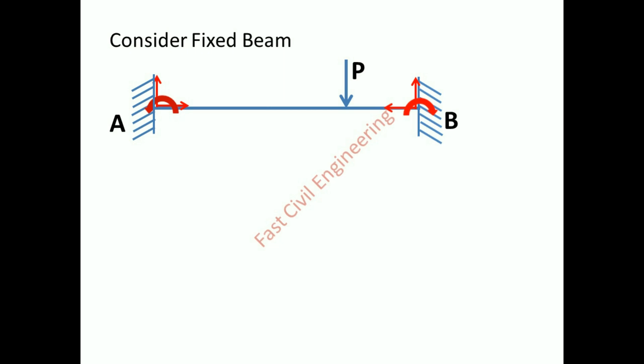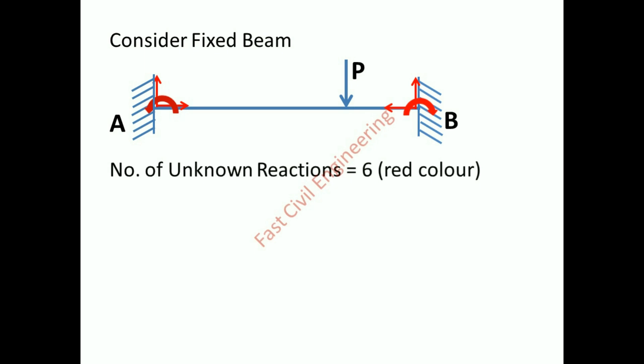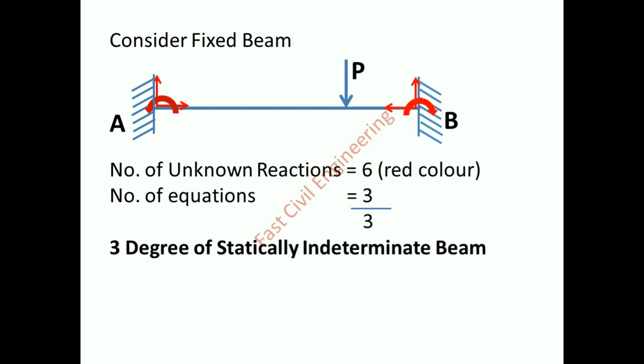Consider a fixed beam with both sides fixed support. Number of unknown reactions equals six. Number of equations equals three — three degrees of statically indeterminate beam.